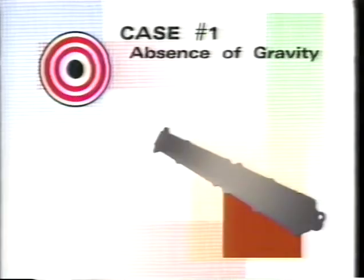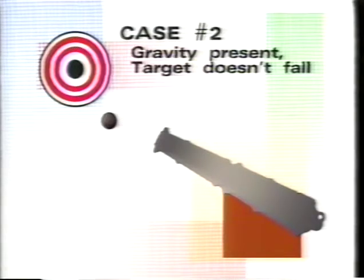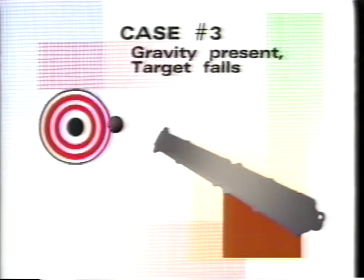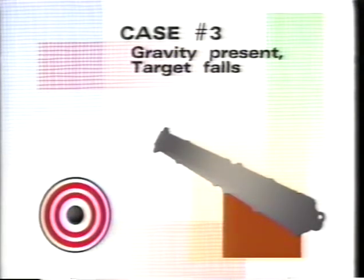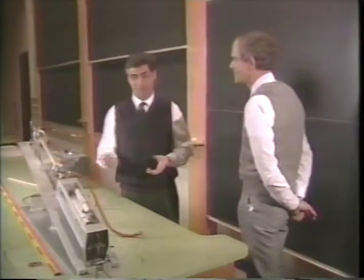Here's the target. Suppose there were no gravity — you could aim straight at the target and hit it, since neither it nor your dart would fall. If gravity is acting and the target isn't released, your dart will fall below it and miss. But if the target falls the instant you fire, and the dart falls at the same rate, the result is a clean hit.